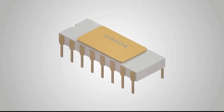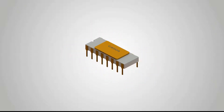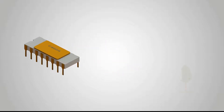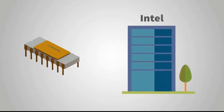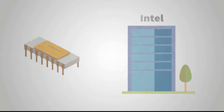In 1971, the world's first computer microprocessor, with a model number of 4004, was launched by Intel Corporation of the United States. At the same time, the technology of microcontrollers gradually developed and has been widely used.